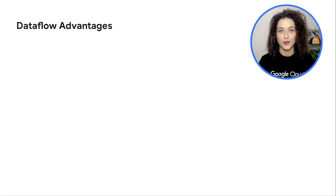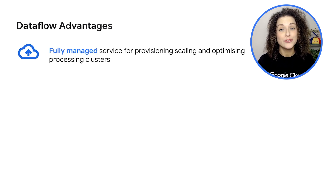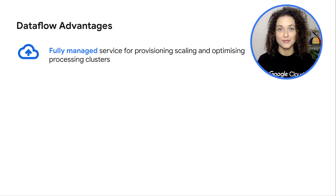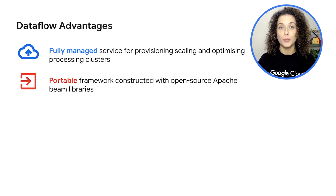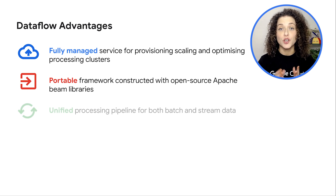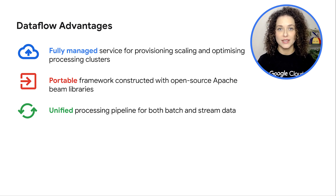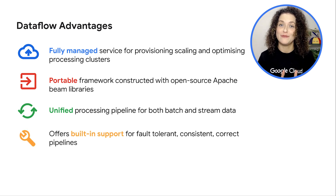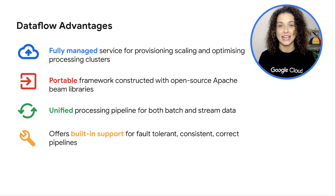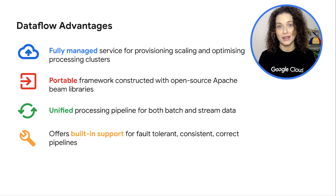The key advantages of Dataflow are that it is fully managed, so it removes your operational overhead when it comes to scaling, optimizing and provisioning your processing pipeline. It is portable because all pipelines are built with an open source Apache Beam library. It is a unified processing pipeline, which means you don't need to recreate the wheel for your batch or streaming processes — you can easily use the same pipeline for both patterns. It offers comprehensive built-in support, which means your pipelines will be fault tolerant, consistent and correct, regardless of their complexity. It also shows throughput and lag statistics, as well as log and system checks, which means your pipelines are simple and seamless to manage.